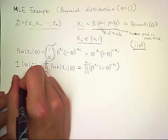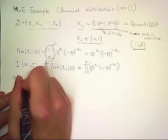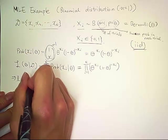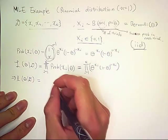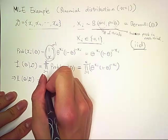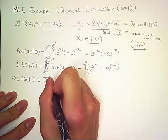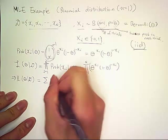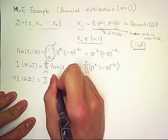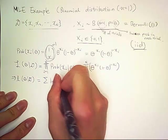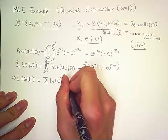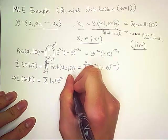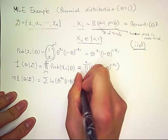Now we can define our log-likelihood function, which is sum of natural log of theta to the x sub i times one minus theta to the one minus x sub i.